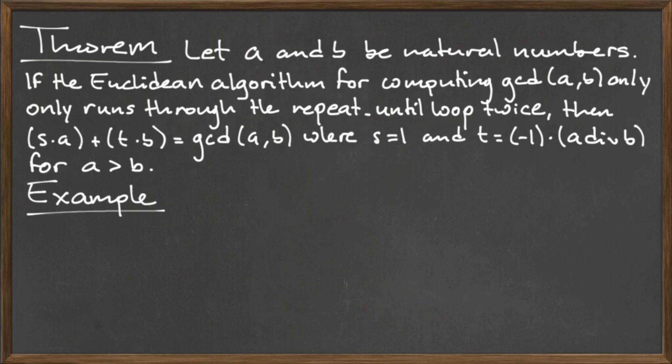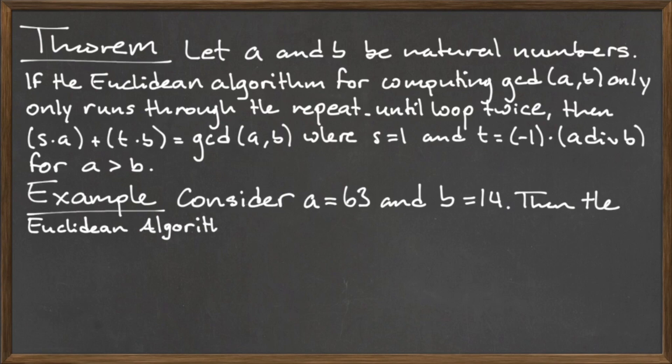For example, let's use Bézout's identity to compute the cofactors s and t for a equals 63 and b equals 14. We first need to use the Euclidean algorithm to compute the gcd of 63 and 14.